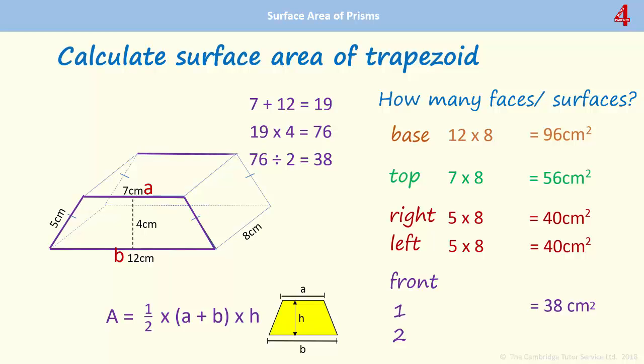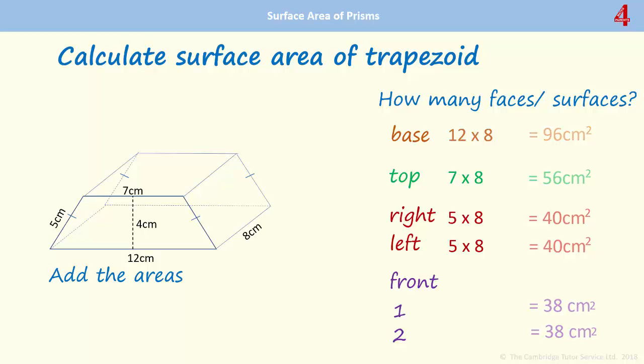Now we add those areas together and the total surface area of this trapezium prism is 308 centimeters squared.